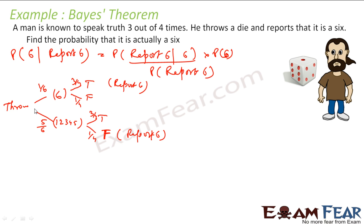This guy throws a die and the result can be 6 or not 6. If it is 6 and he is telling true, then he is reporting 6. If he is telling false, he may report some other number. I am only bothered about a report of 6. If it is not 6 and he reports false, then only he is reporting 6. That is the structure.